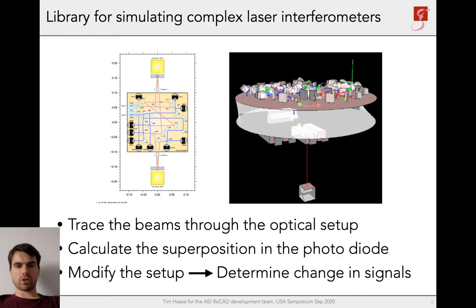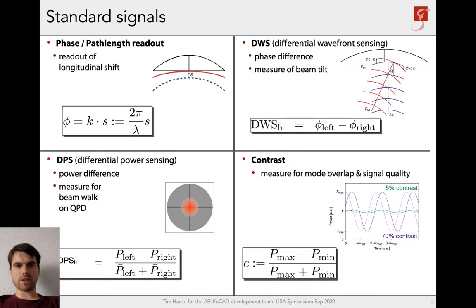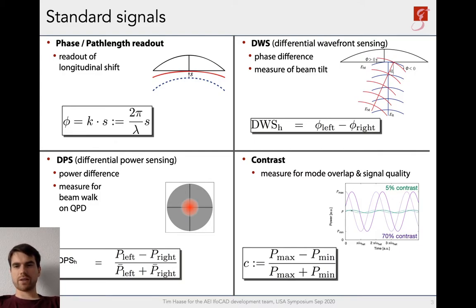Let me show you the signals you can obtain from the photodiode. The first is the phase or path length difference between the interfering beams. The second is the differential wavefront sensing signal to determine if your beams are parallel. The next is the differential power sensing signal to determine if your spot is centered on the photodiode. And the last one is the contrast, which you can optimize for. These signals are generally not available in commercial optical simulation tools, which is why you would use IFOCUT.